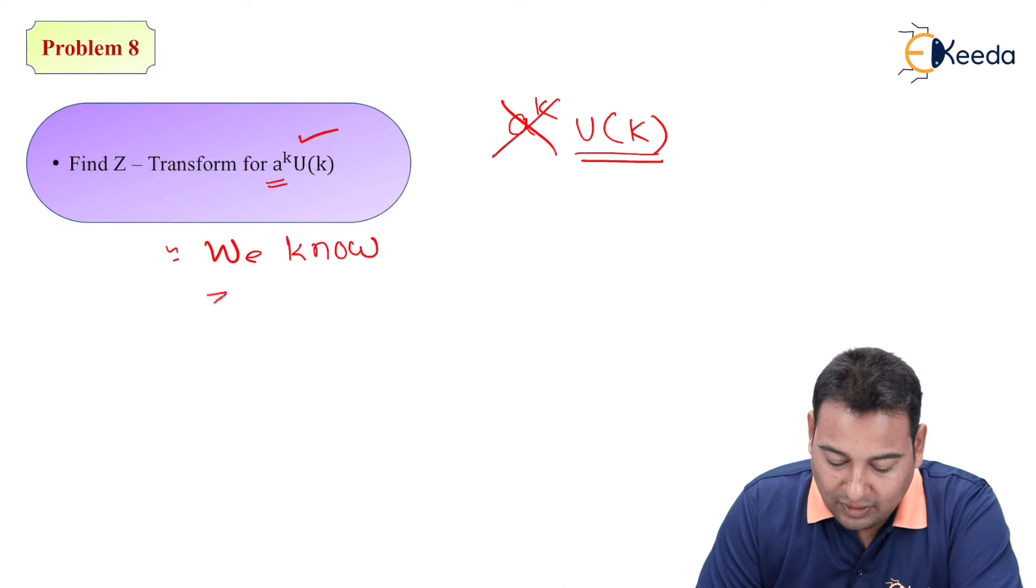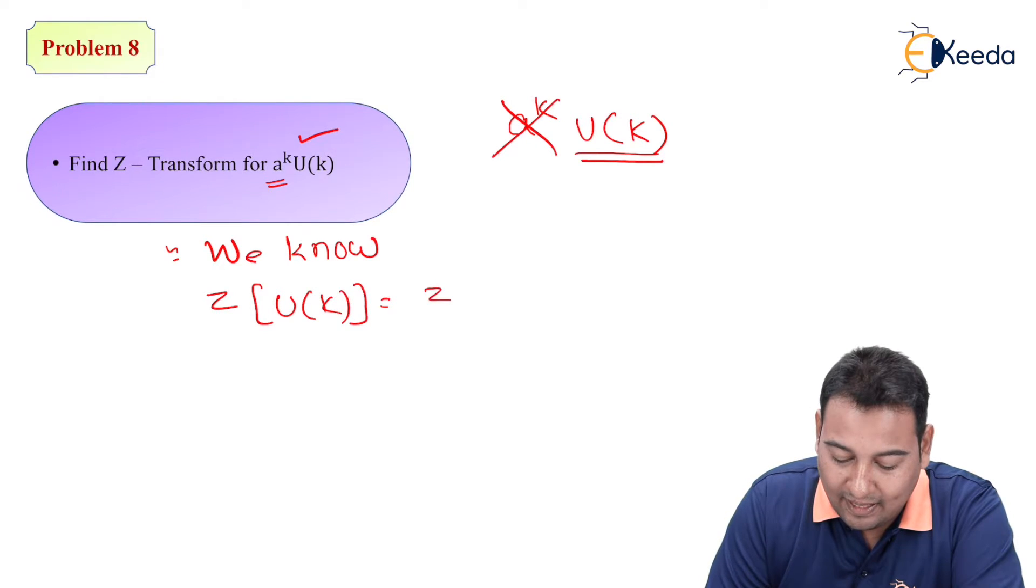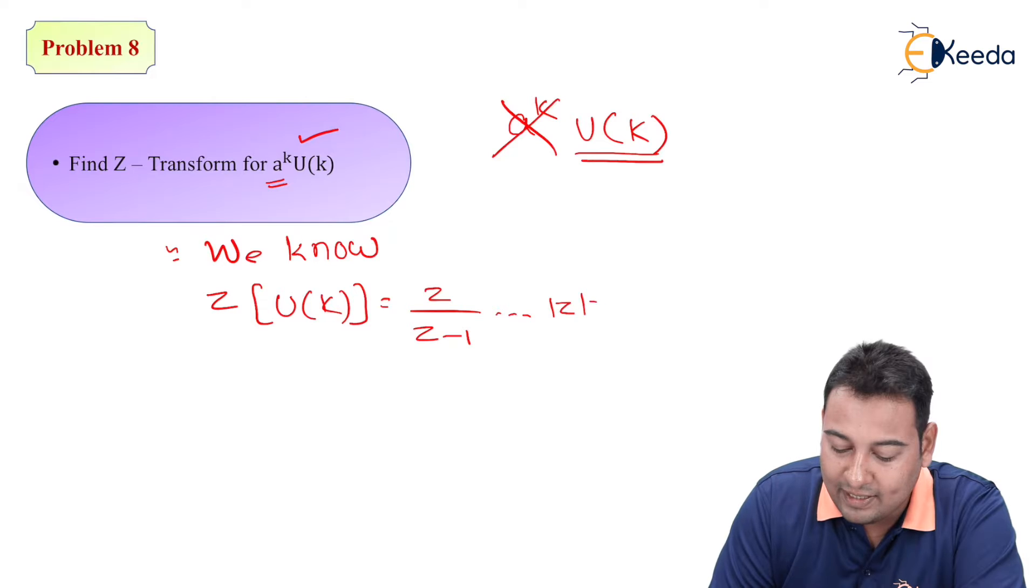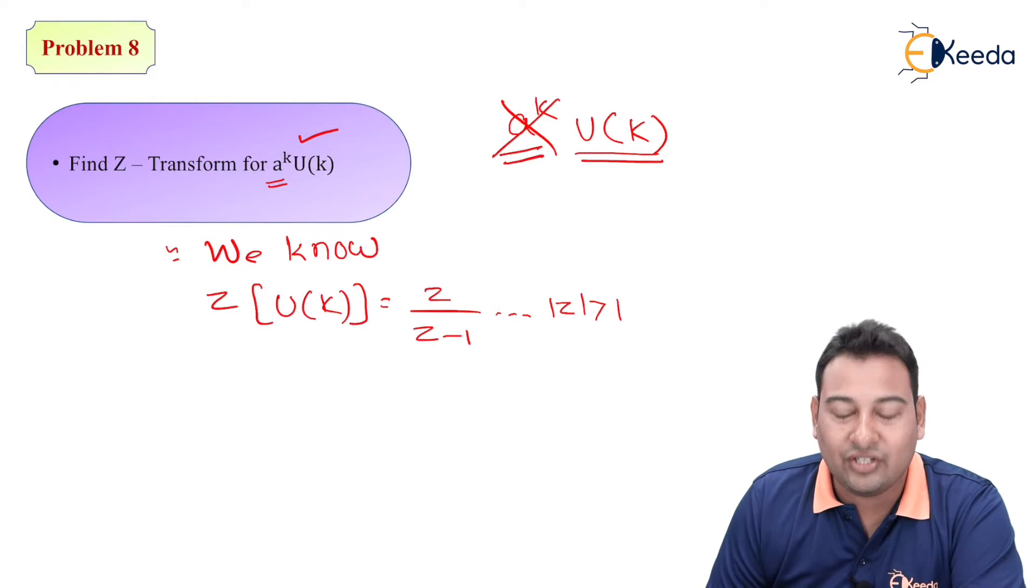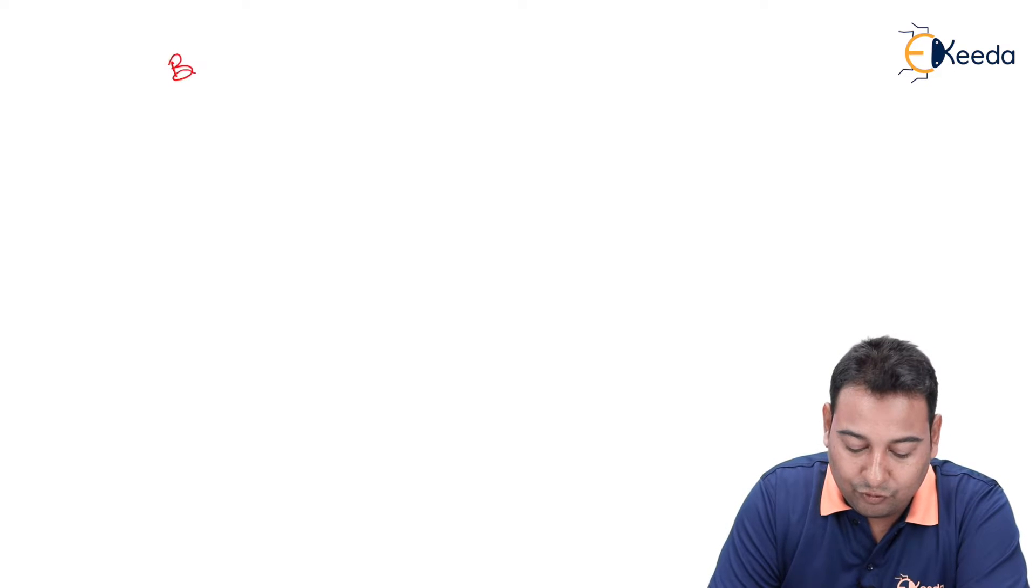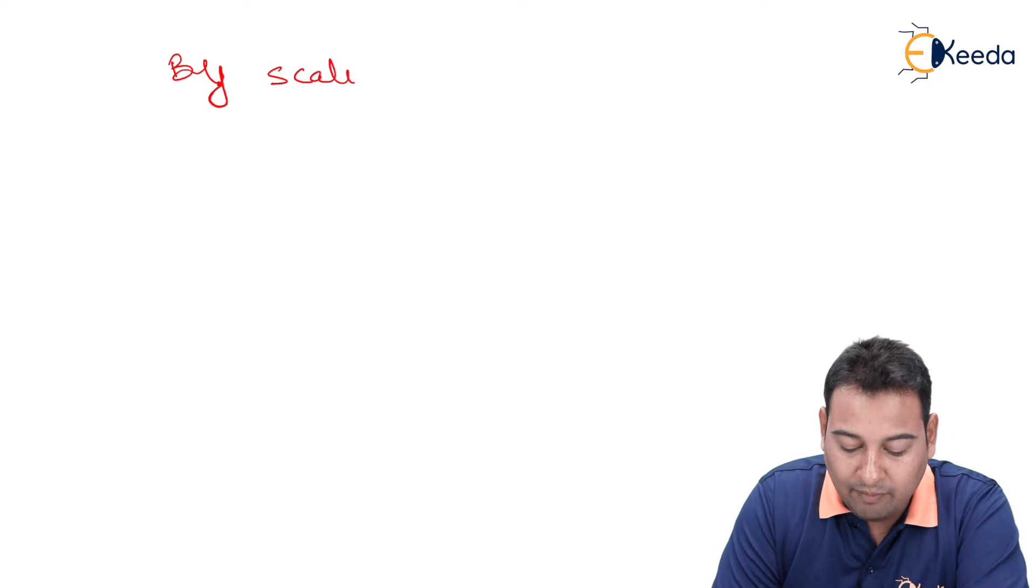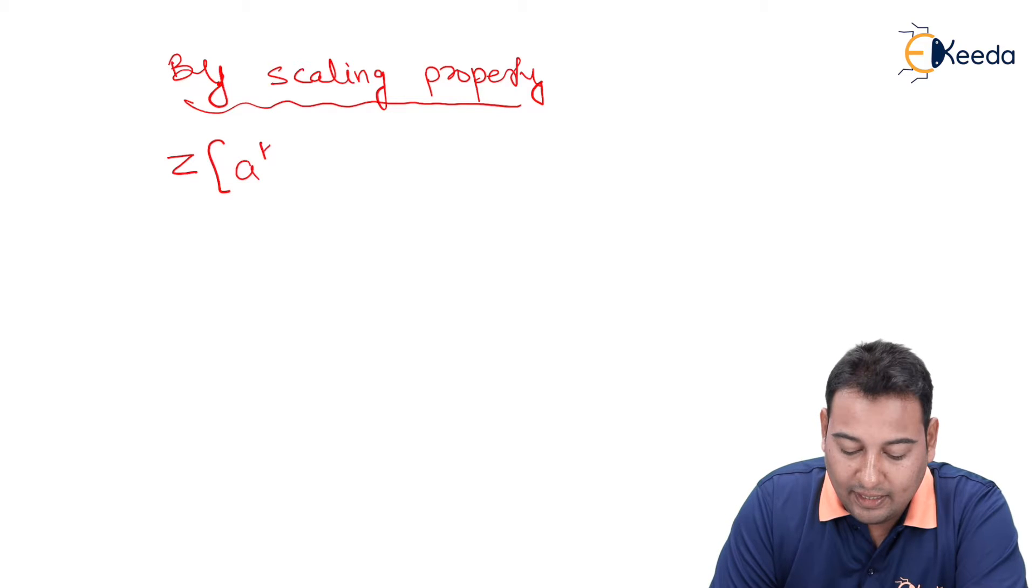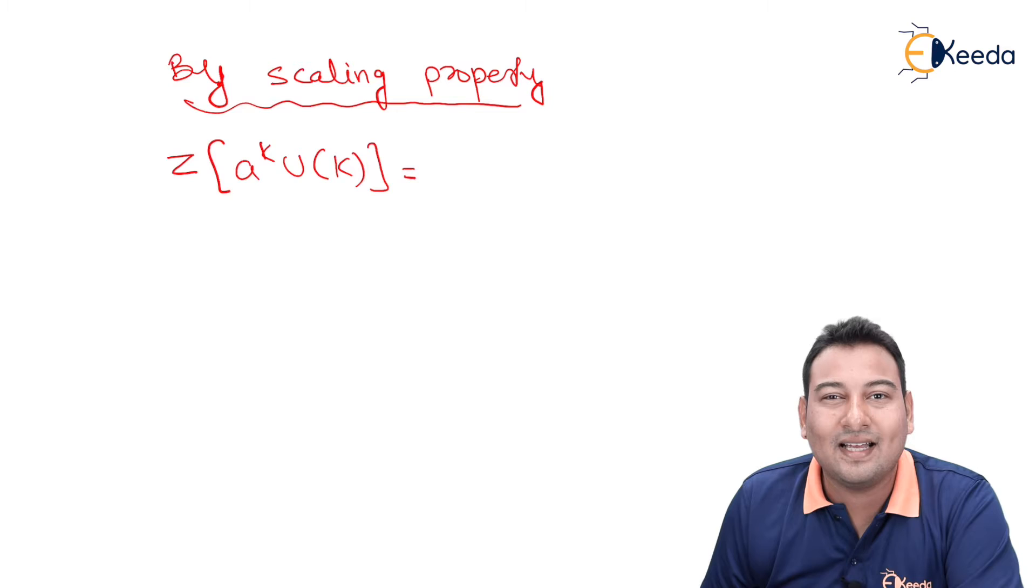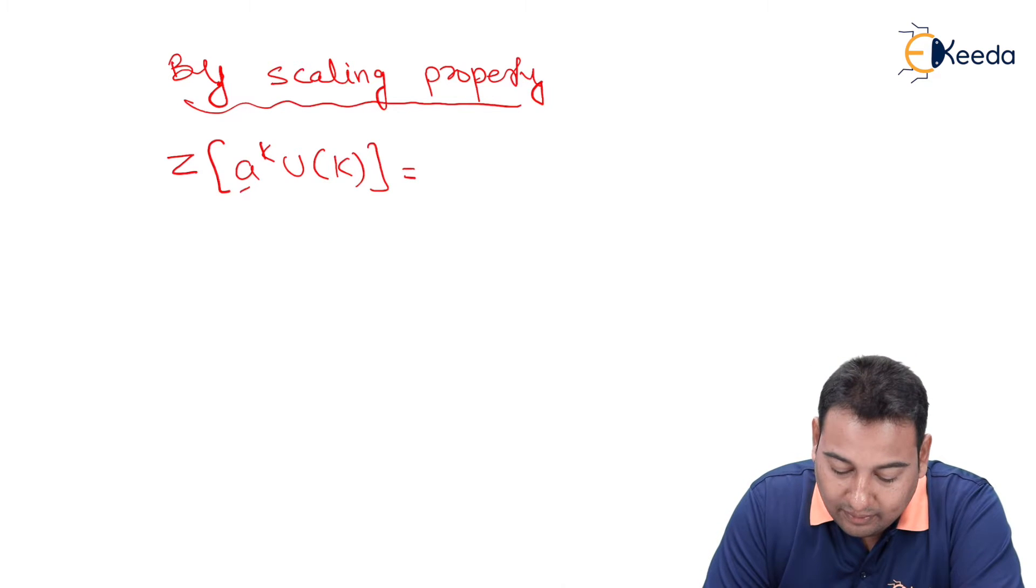What is the z-transform of u(k)? Since we know, we have discussed u(k) is which? Unit step function. So z-transform of u(k) is z upon z minus 1 where mod z greater than 1. This a raise to k indicates change of scale property. So by scaling property or change of scale property, z-transform of a raise to k into u(k)...